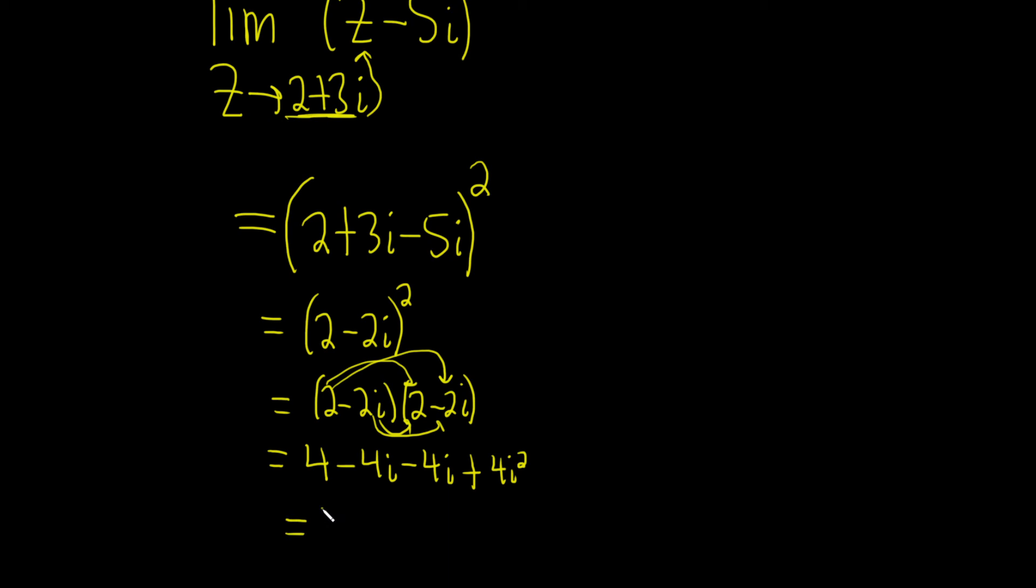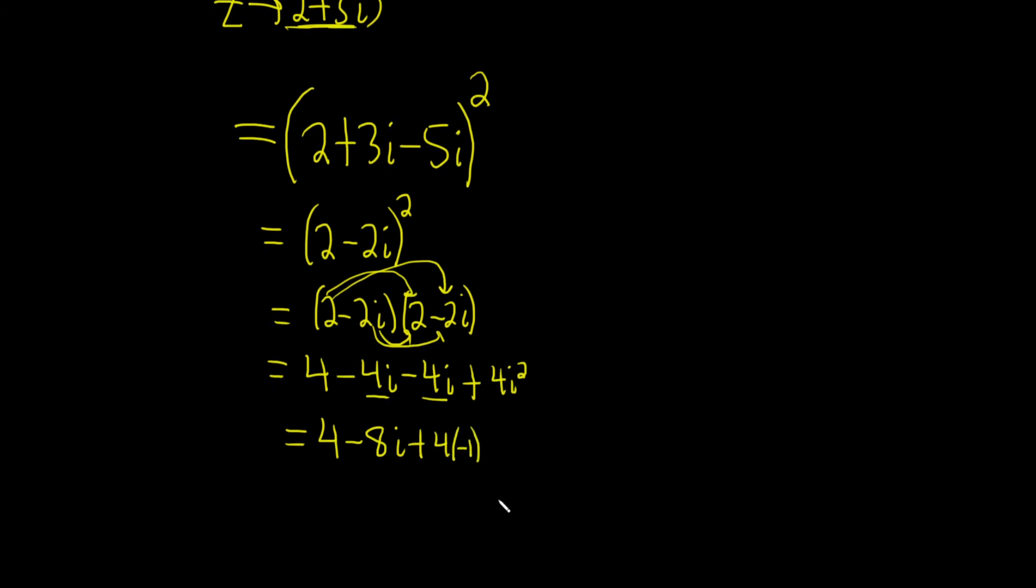So this is equal to 4. Minus 4i minus 4i is minus 8i, and then 4 times i squared is going to be 4 times negative 1. So these will cancel, these 4s. So we just get negative 8i.